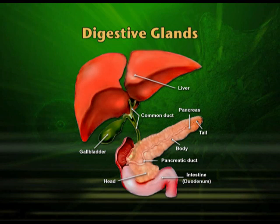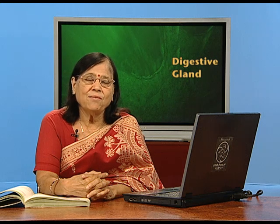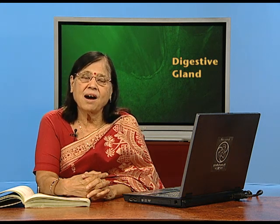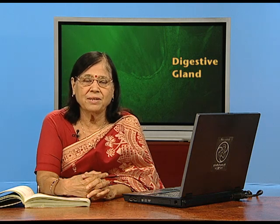Bile is the secretion of the liver. It is greenish-blue in color and is very important. It contains bile pigments and bile salts. There is a sphincter of Oddi located between the hepatic duct and the duodenum, so bile can flow from the liver through the hepatic duct to the duodenum but not backward. Its main job is emulsification of fat.